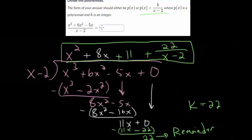So let's put that in the box, we have x squared plus 8x plus 11, and then plus 22 over x minus 2.